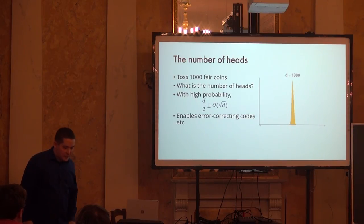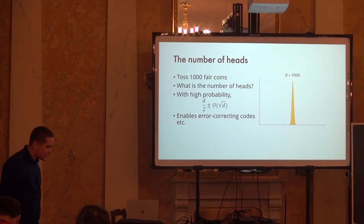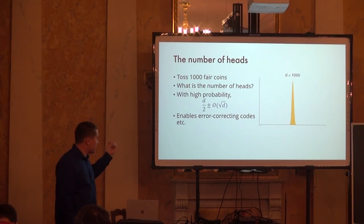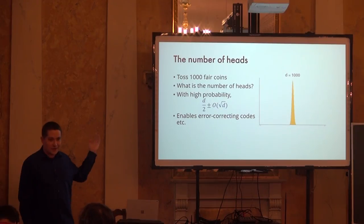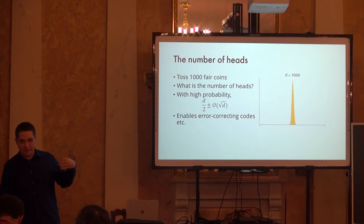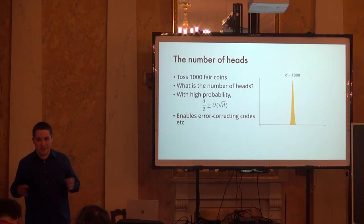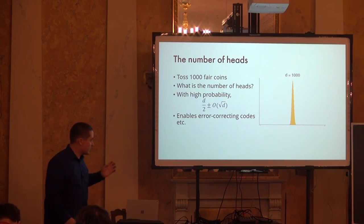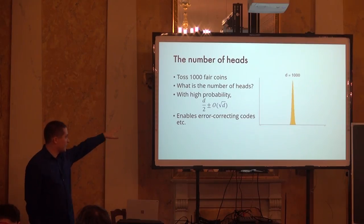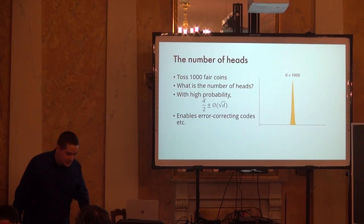This √D concentration is the same phenomenon as on the sphere — it has the same nature. It's a simple formula involving binomial coefficients, but it enables a lot — for example, error correcting codes. You start with a message, increase its length a bit to make it resilient to corrupted bits. This probabilistic observation already gives you an error correcting code with good parameters, though it's not explicit.